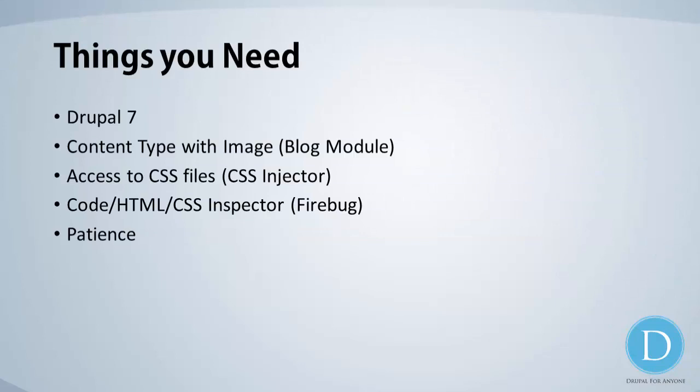Now there are a few things you're going to need. First you're going to need a Drupal 7 website. Next you're going to need some type of content that has an image, so you need a content type with an image field. We're going to use the old blog module that comes with Drupal 7. I don't normally use this myself — I build my own custom blog module — but for now we're going to use the built-in blog module and add an image field to it for our example.